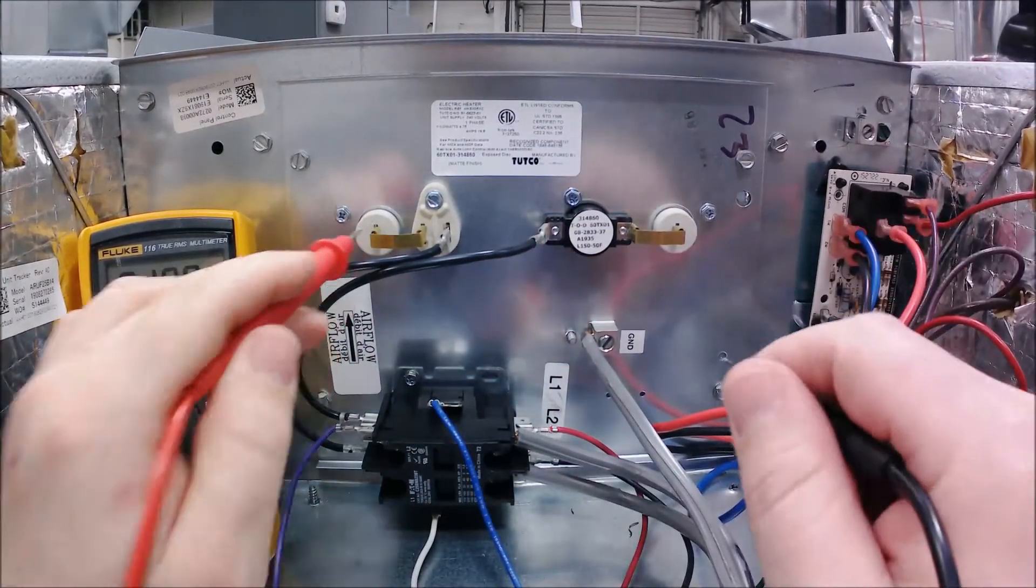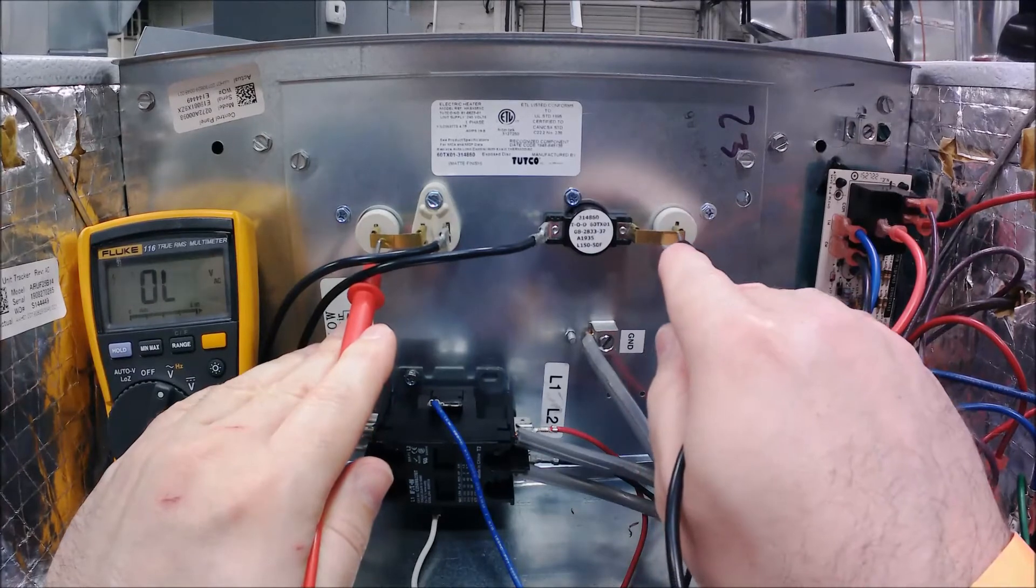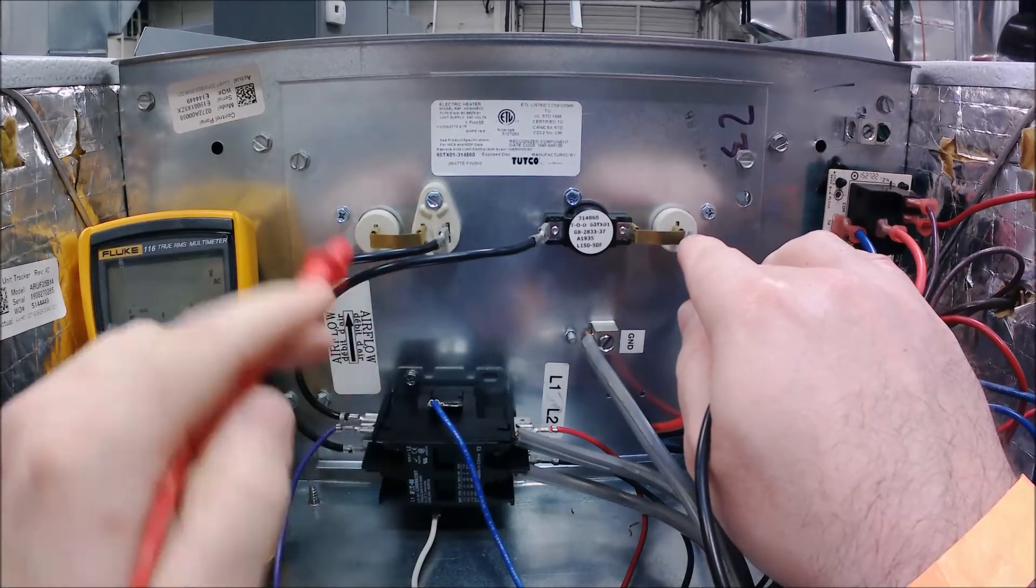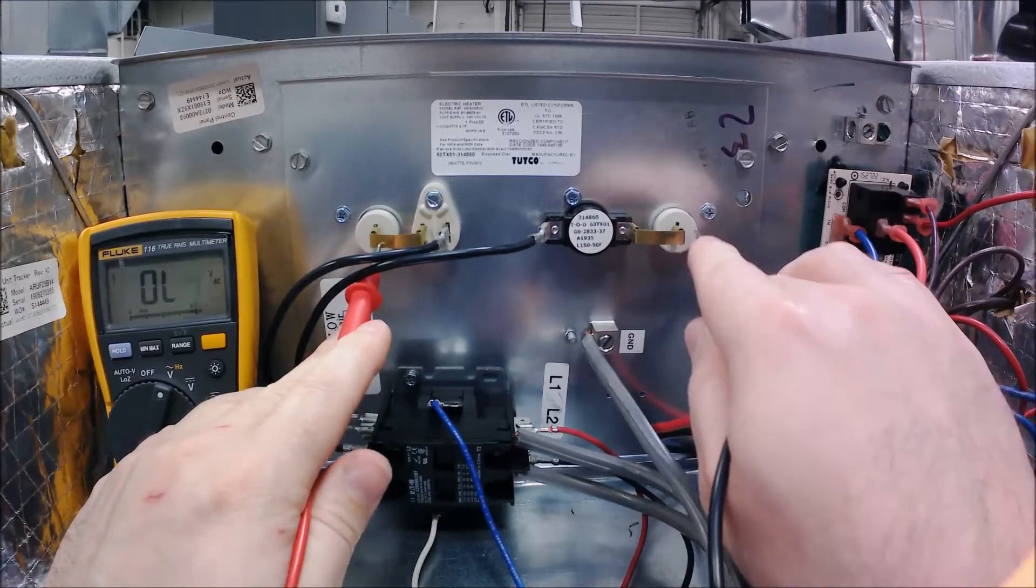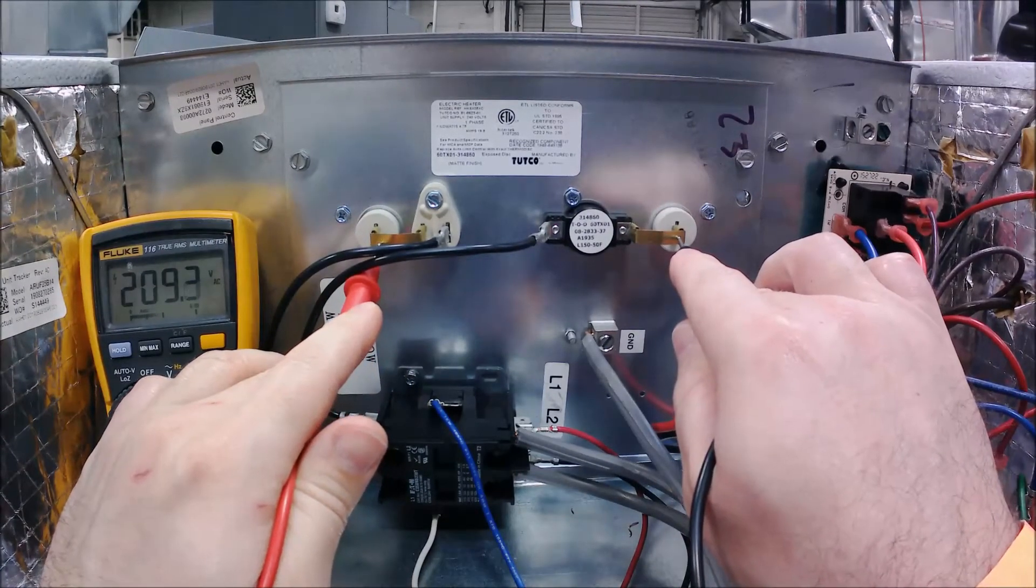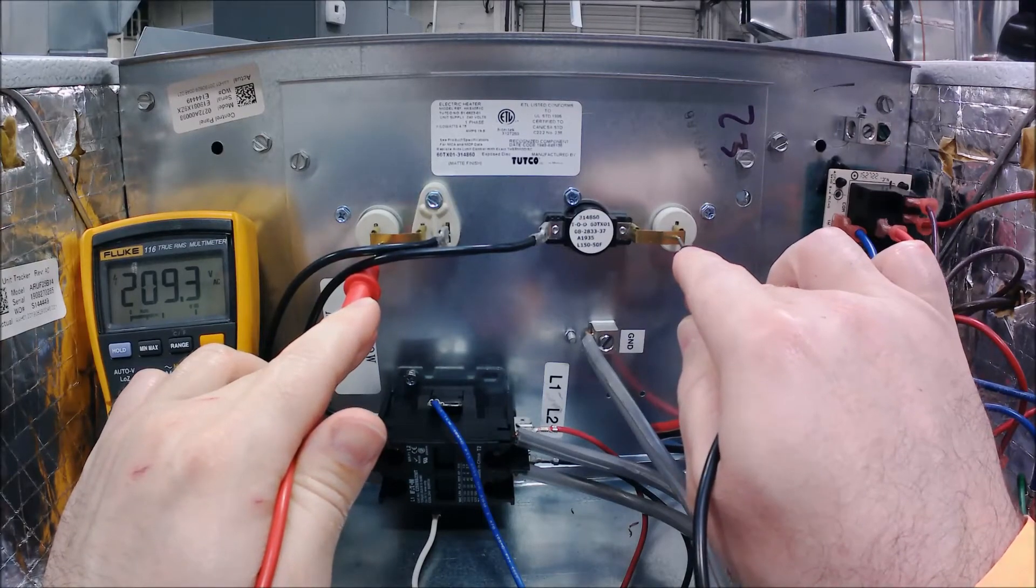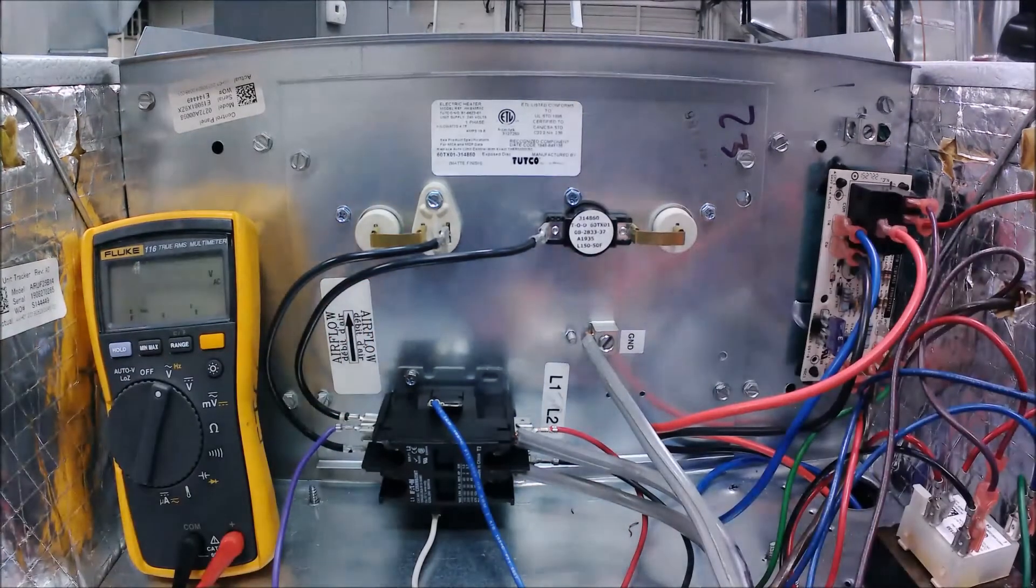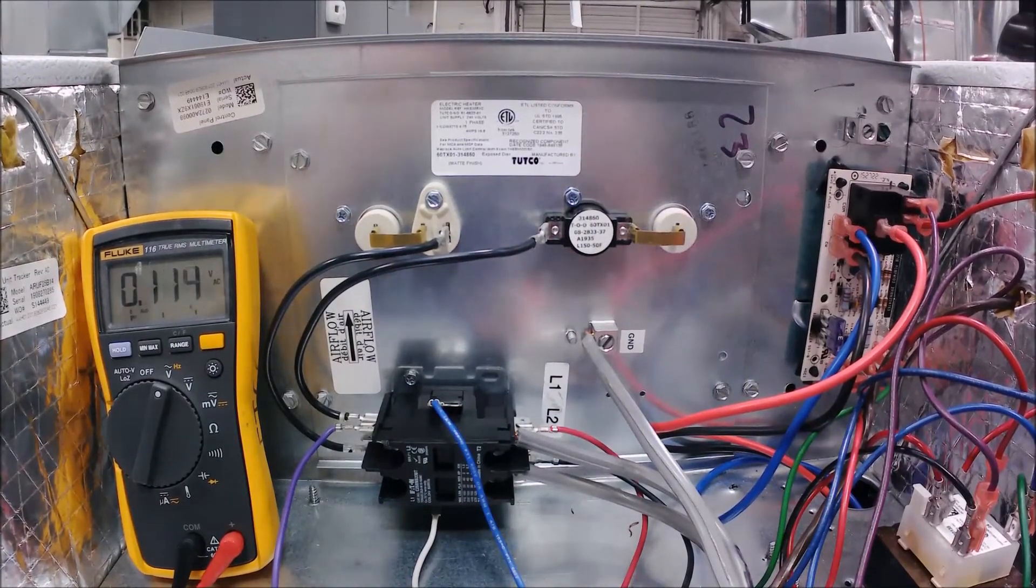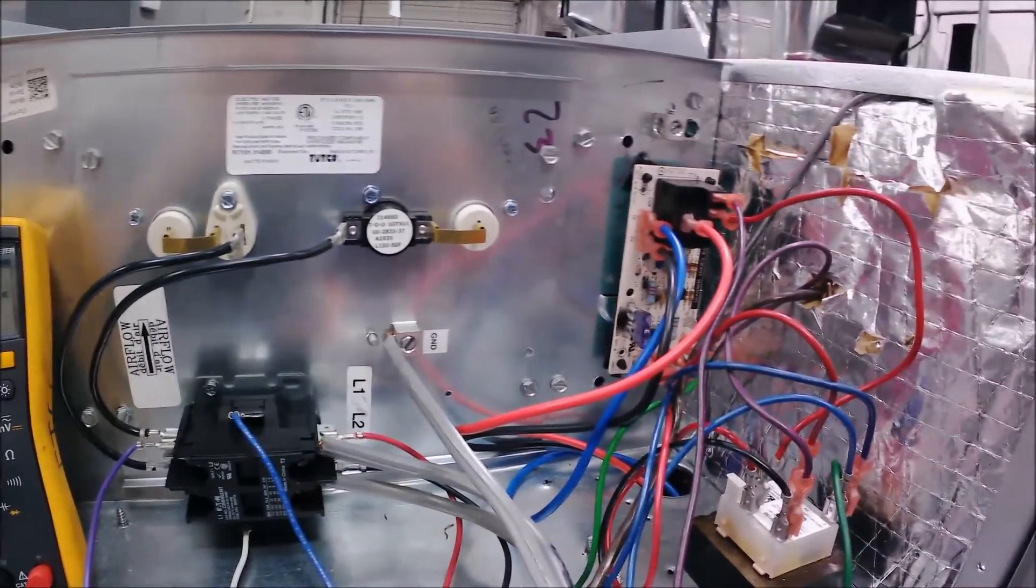For my electric heater, this is my heater strip right here - these two ceramic blocks right here, that is the beginning and end of my electric heater strip. So you can see here that I've got the full voltage going to it, and of course we've already done the amp draw, so everything is good.